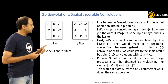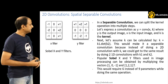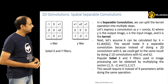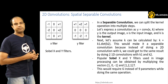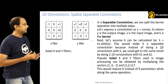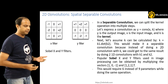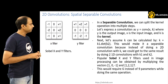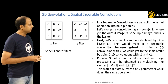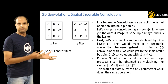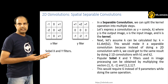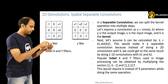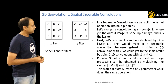The last topic in this video is spatial separable convolutions. What you see in the picture are the Sobel filters — Sobel X and Y filters — used in typical image processing for edge detection. In a separable convolution, we can split the kernel operation into multiple steps. Let's express a convolution as y(x, k) where y is the output image, x is the input image, and k is the kernel.